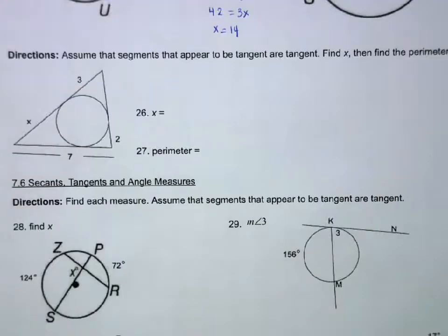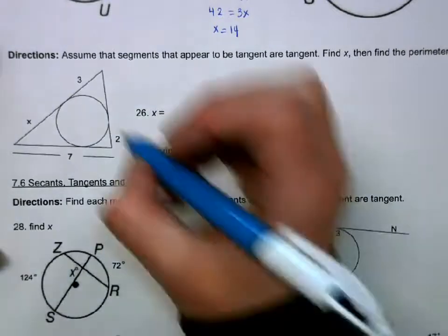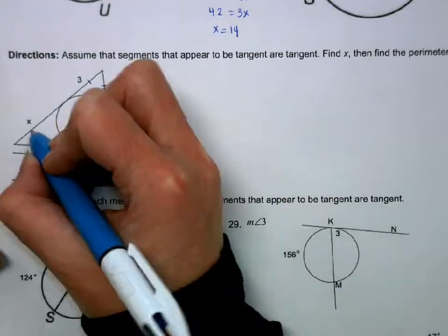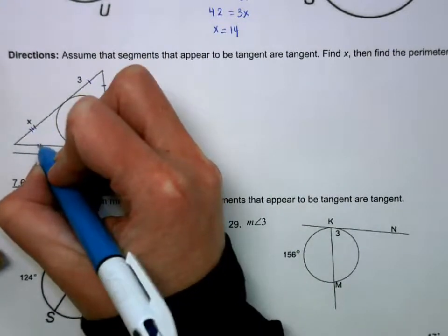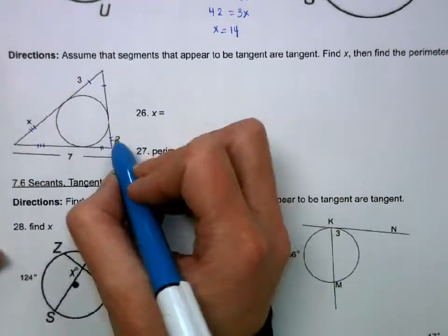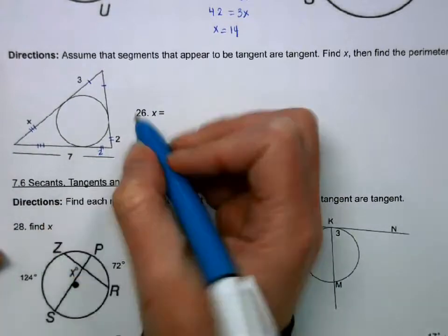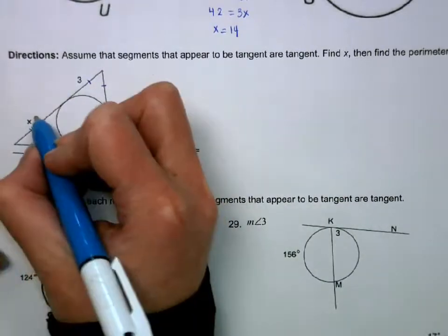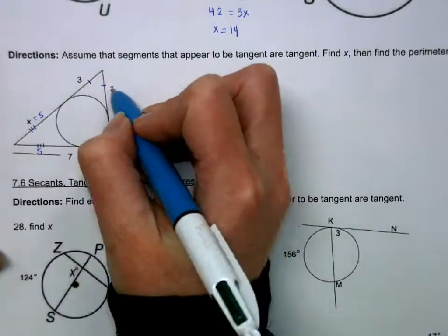For this next one, we're going to use that same property that if they're coming from the same point, they're equal. So those two are equal, those two are equal, and those two are equal. Well, if this is 2, this is 2. If this whole thing is 7, that makes that 5, which makes that 5. And I'll go ahead and fill in that 3. So X is 5.